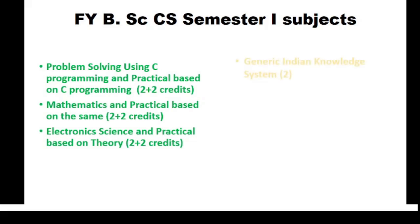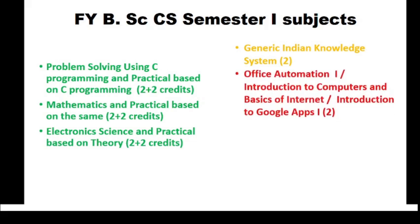The next subject which is compulsory to all streams is the Generic Subject IKS, that is Indian Knowledge System, carrying 2 credits. Next, students need to select 1 subject from Office Automation, Introduction to Computers and Basics of Internet, or Introduction to Google Apps. Each subject carries 2 credits, and students need to select just 1 from these 3.